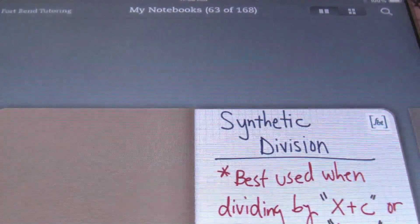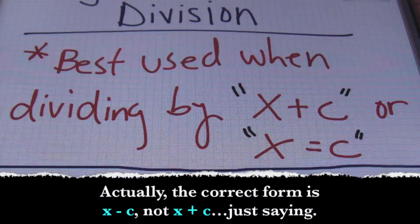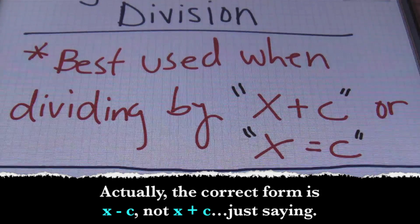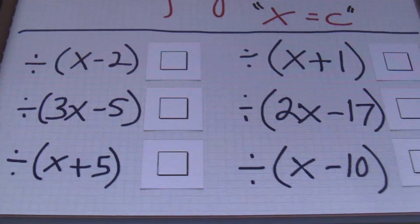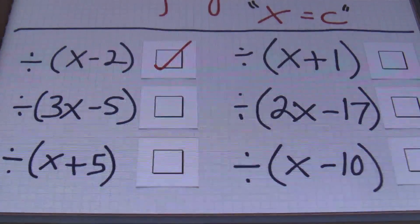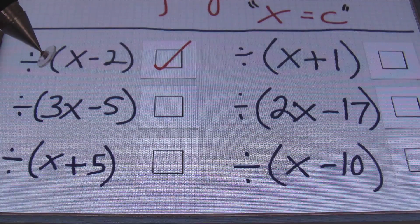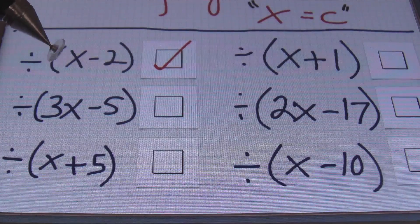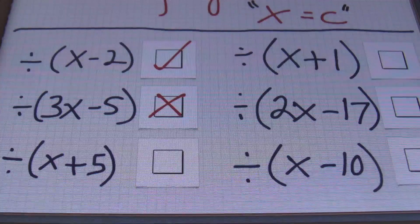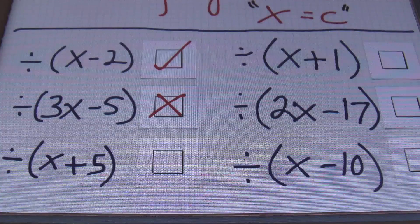Alright, so let's take a look at it. First of all, ladies and gentlemen, synthetic division is best used when you're dividing by the form of x plus c, or if it's written as x equals to c. What I mean by that is: if you are dividing by the quantity of x minus 2, then go ahead and use synthetic division. However, if you have a coefficient in front of x that's not 1 — for instance, here we have 3 in front of the variable x — then this is not ideal to use synthetic division. In fact, you may want to go ahead and try using the long division process that we have shown you in our other video.